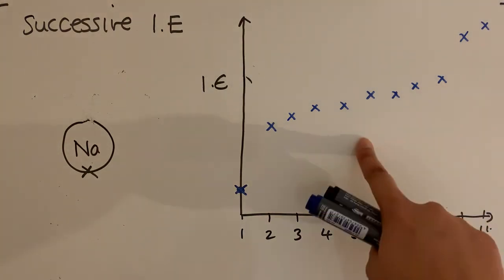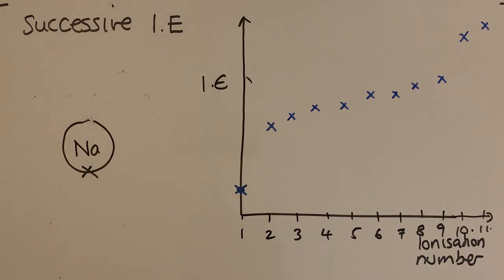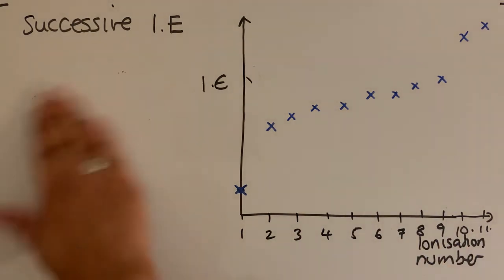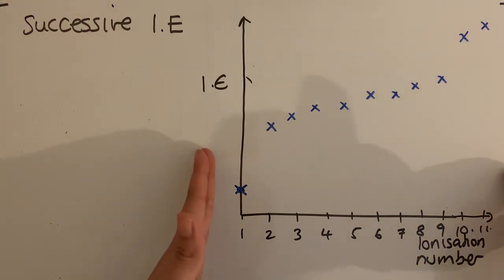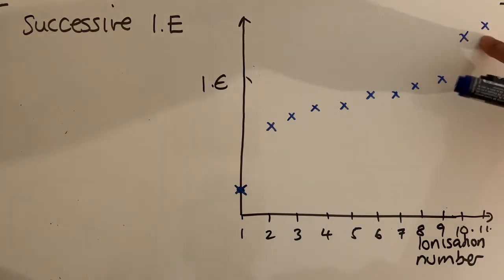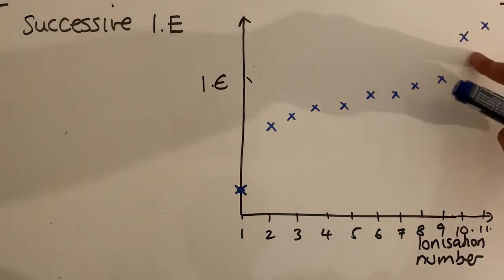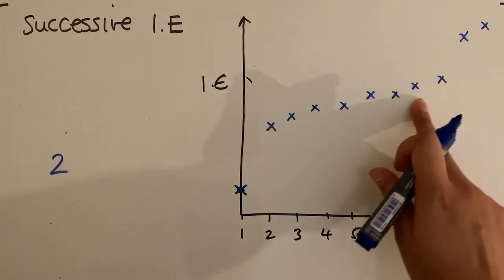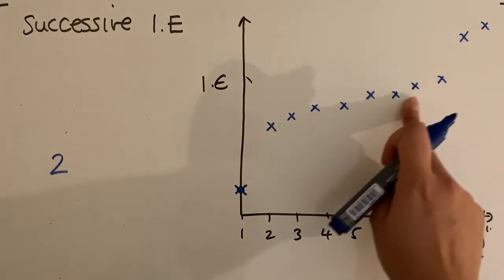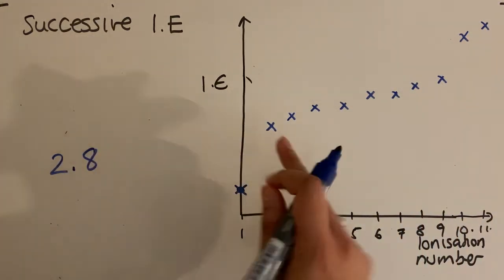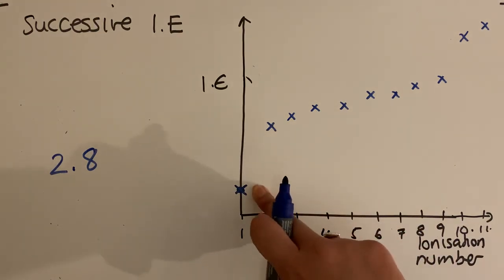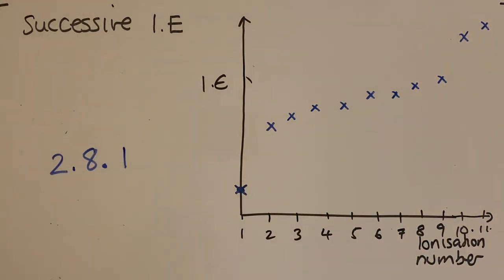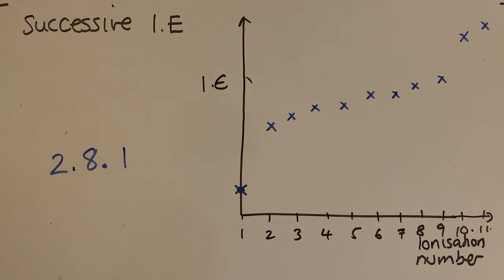These large jumps tell us the electron configuration of the atom. The two electrons with the highest ionization energies are in the first shell. The next group of eight is in the second shell. The one electron with the lowest ionization energy is in the third shell. So the electron configuration is 2.8.1 — which tells us it is a sodium atom.